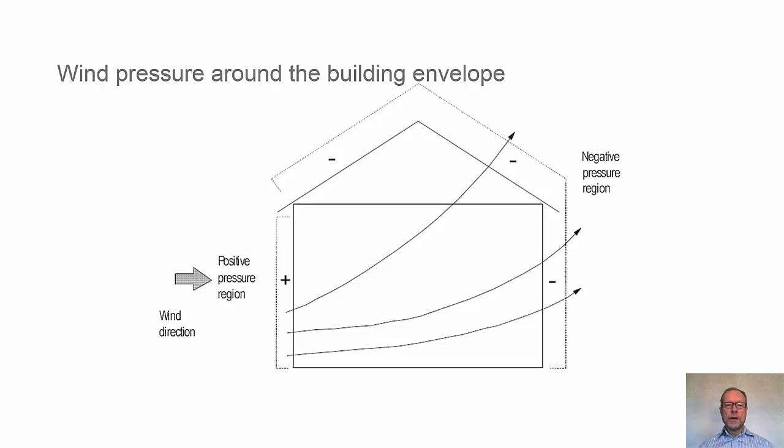This picture illustrates how the pressure could look around the building when we have wind coming from the left. There will be a positive pressure region on the windward side but on the leeward side there will be suction and also suction on the roof. So the pressure around the building will differ.